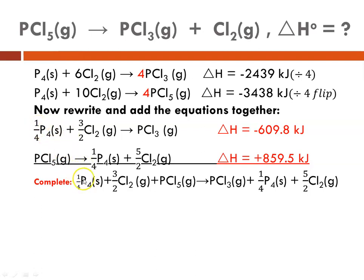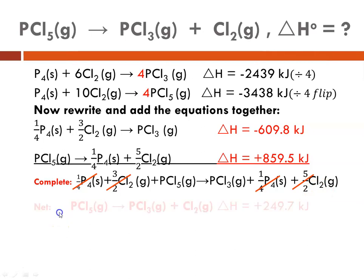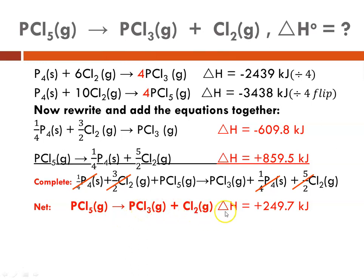Adding together, we have one-quarter P₄ plus three-halves chlorine plus PCl₅ yielding PCl₃ plus one-quarter phosphorus plus five-halves chlorine. We cross out to simplify: the one-quarter phosphorus on each side cancels. On the chlorine side, five-halves minus three-halves equals two-halves, which is one, so one chlorine remains on the product side. The simplified net equation is: PCl₅ → PCl₃ + Cl₂. Adding the two delta H values gives positive 249.7 kJ per mole, indicating an endothermic process.